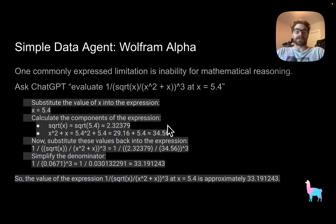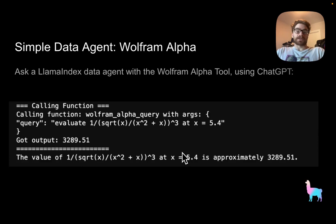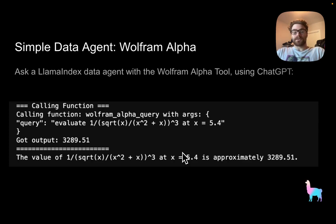A very simple example is asking ChatGPT to evaluate something like a simple quadratic. We can see that it goes through the reasoning and tries to do all of these calculations. But it makes one big mistake — calculating the cube of 0.06 way off, and subsequently our final answer of 33 is way off. Now, with a Llama Index data agent, we can provide it the Wolfram Alpha tool. This is the exact same large language model, ChatGPT 3.5, and instead of trying to walk through the math itself, the agent just passes the equation to Wolfram Alpha and gets the answer right back — using fewer tokens than having the large language model try to reason it out.